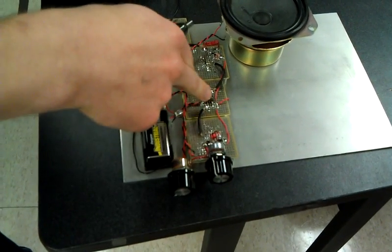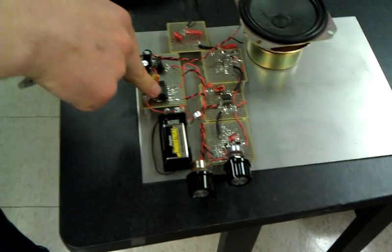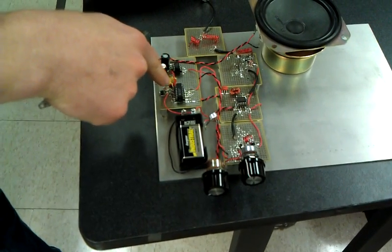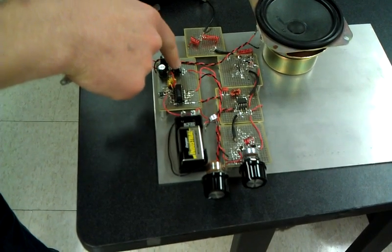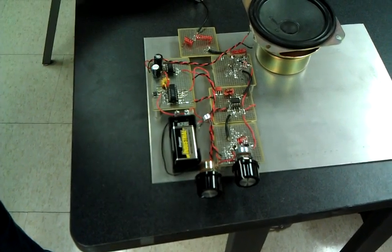And then the output of the mixer goes to the demod chip right here, and then that demod chip outputs audio to the audio amplifier here, and then we play the sound through the speaker.